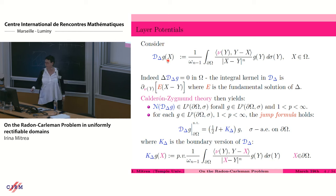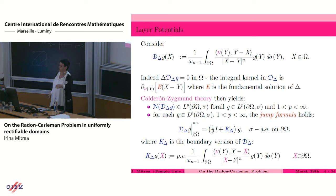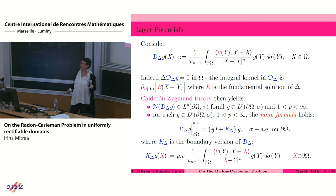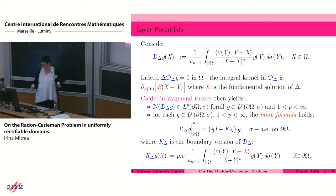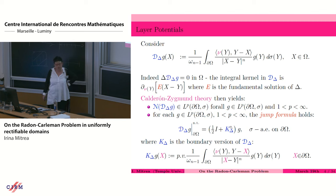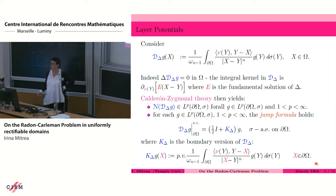The operator D_delta takes the function g on the boundary into a harmonic function inside the domain. What the operator K_delta does is it takes functions on the topological boundary of the domain omega onto functions which are on the boundary of omega. The boundary-to-boundary version of the double layer looks very much like the form above, with the fundamental difference that the point x is now on the topological boundary. So the integral kernel becomes a singular one, and the integral has to be understood in the principal value sense.